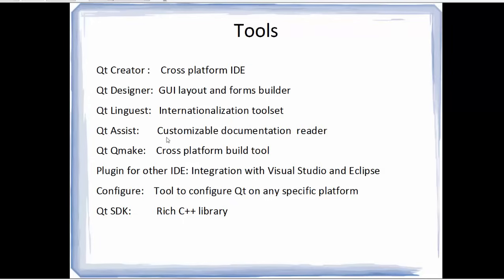The build system that comes with Qt is Qmake, which is a cross-platform building tool, similar to a makefile or cmake. Qt also has plugins for other IDEs, so it can be integrated with Visual Studio for Windows or with Eclipse IDE. There is also a configuration tool which allows you to configure Qt on any specific platform.